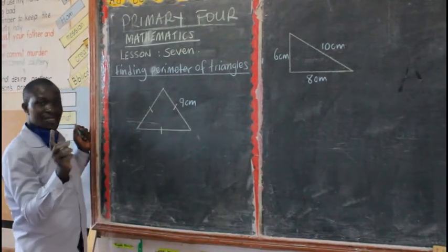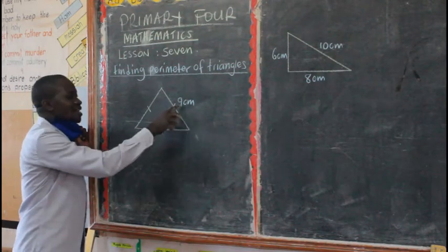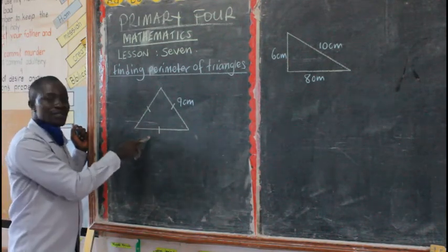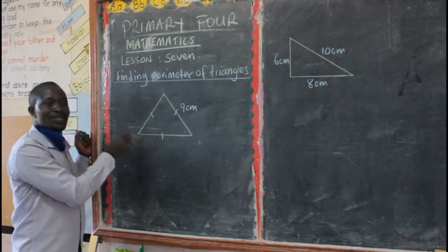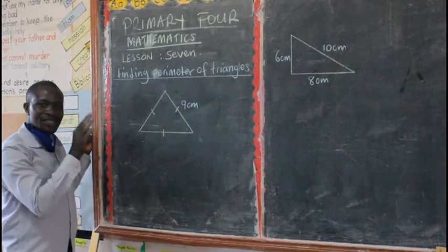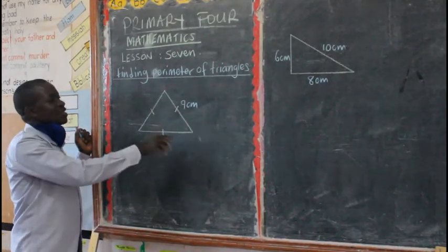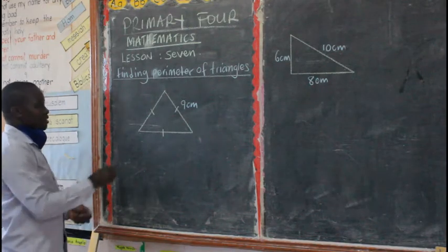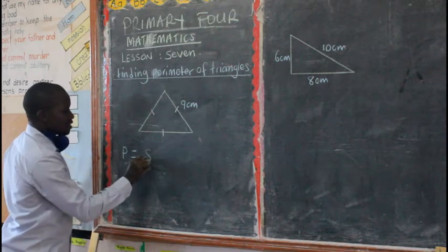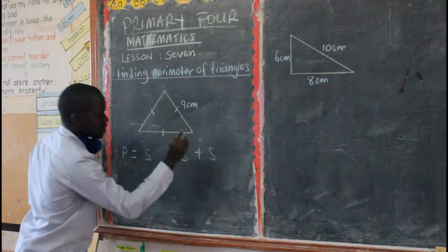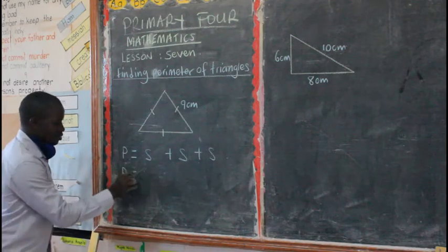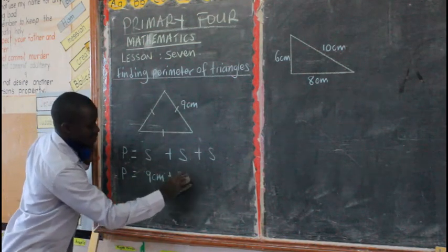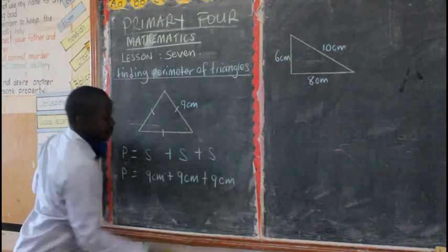And now here they have given us only one side, meaning that since all sides are equal, since here is 9, even here must be 9, even here must be 9, because all sides are equal. So here they just give you only one side, meaning that all sides are equal. So if here it is 9, this is 9. Then here,